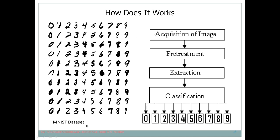We are using the MNIST dataset, which consists of a large number of handwritten images. Here you can see that the digit '1' can be written as a single line, slanting, dark, peaked at the bottom, or totally slanted — there are many different ways to write the same digit. We want our system to recognize all of these as digit one, two, three, and so on up to nine.